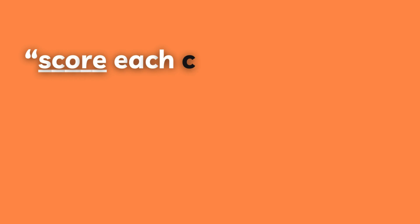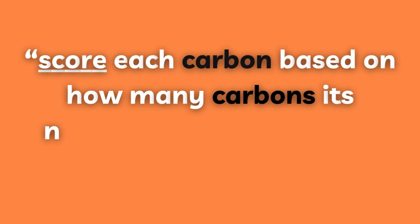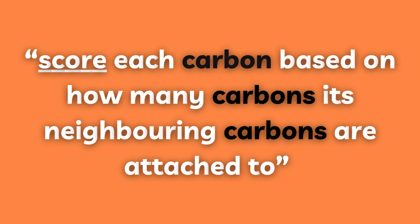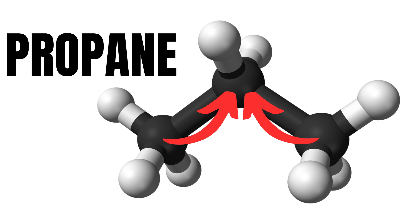We can score each carbon based on how many carbons its neighboring carbons are attached to. Sorry if that was a bit confusing. So in this case, the carbons at the end are both attached to a secondary carbon, meaning a carbon attached to two other carbons. Therefore, we give both of them a score of two.